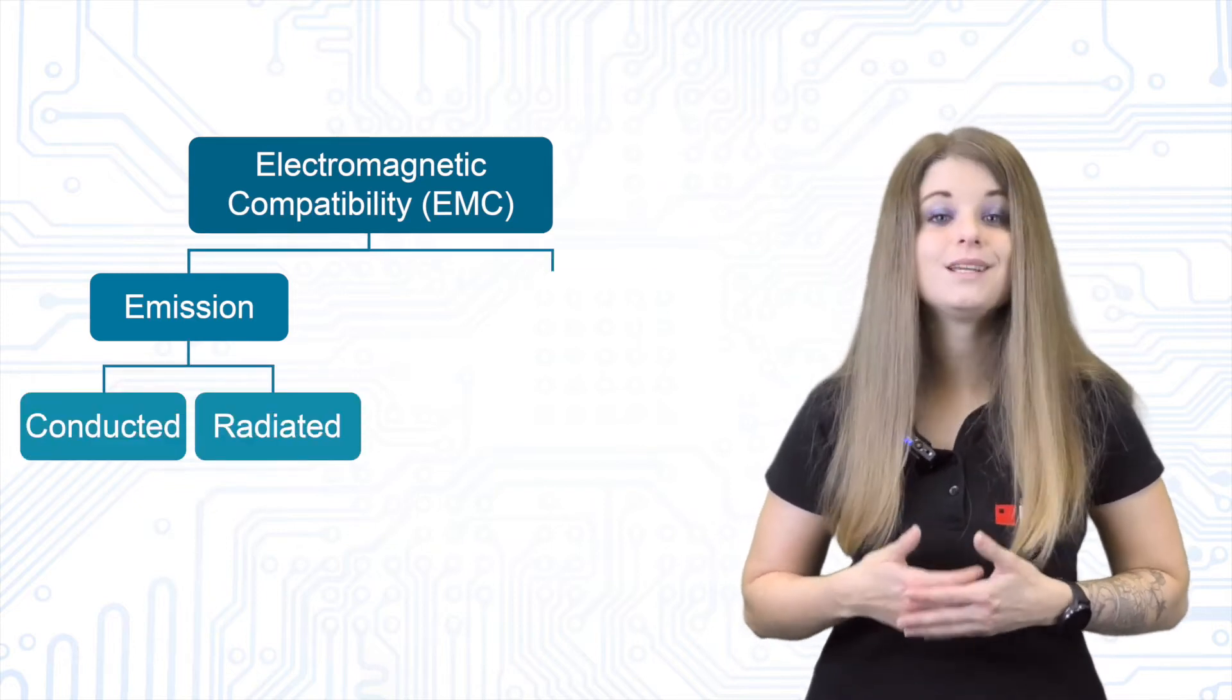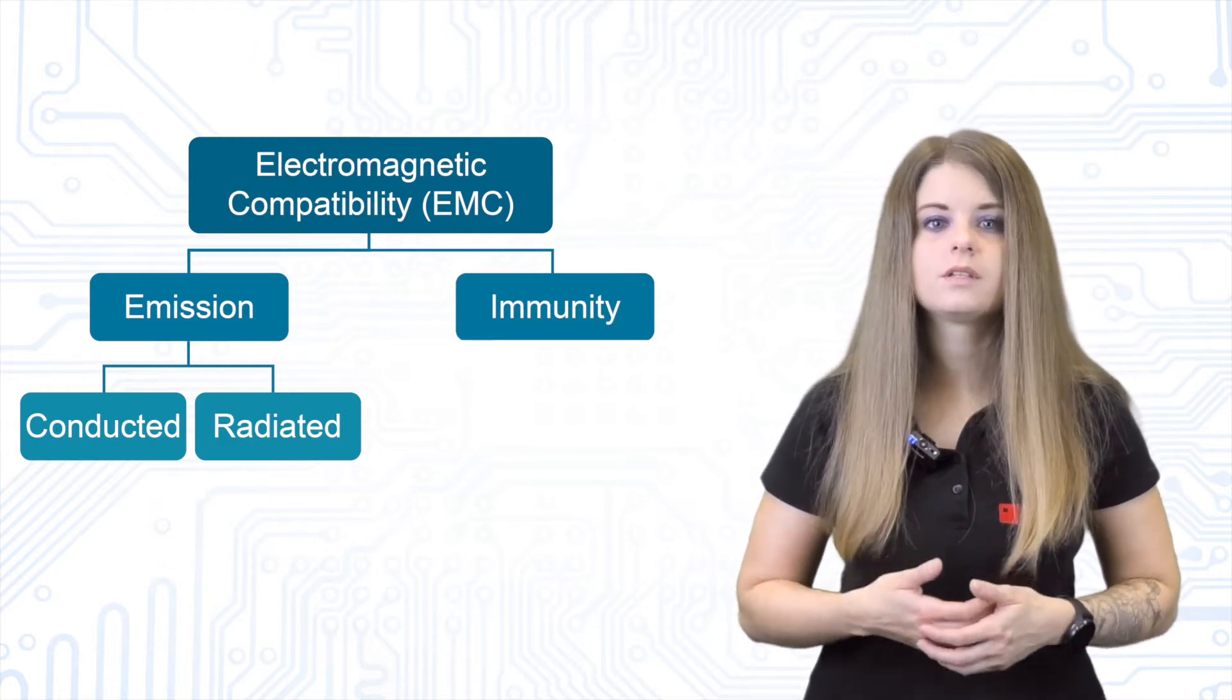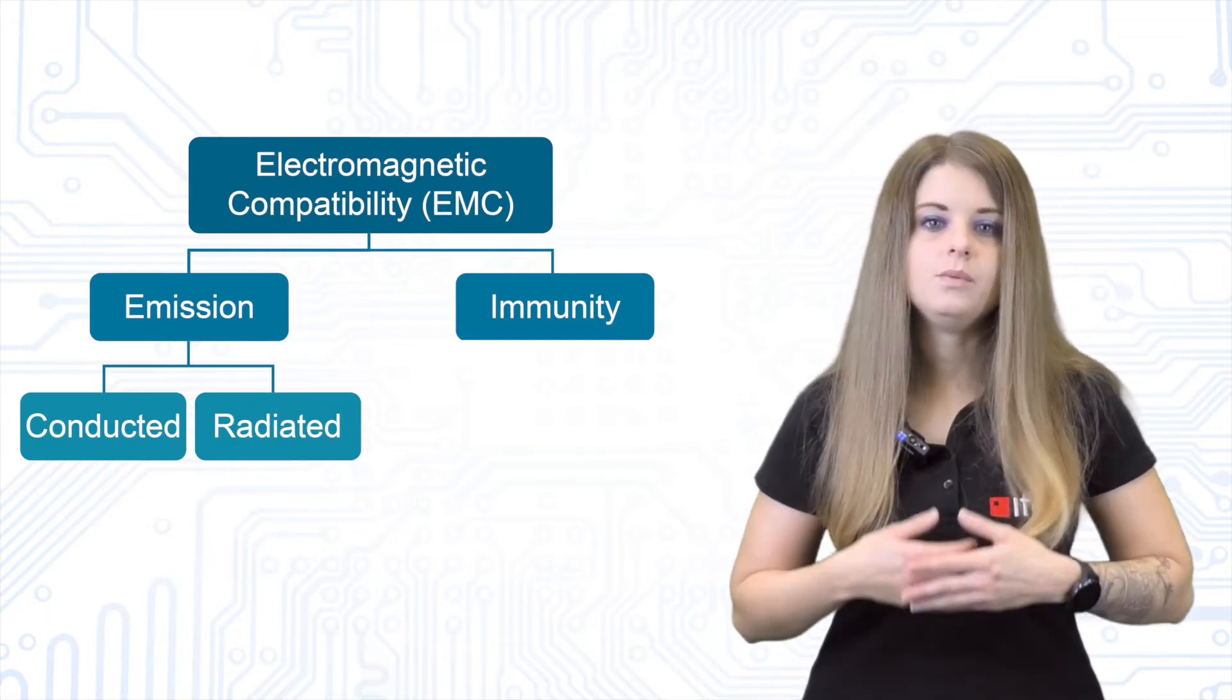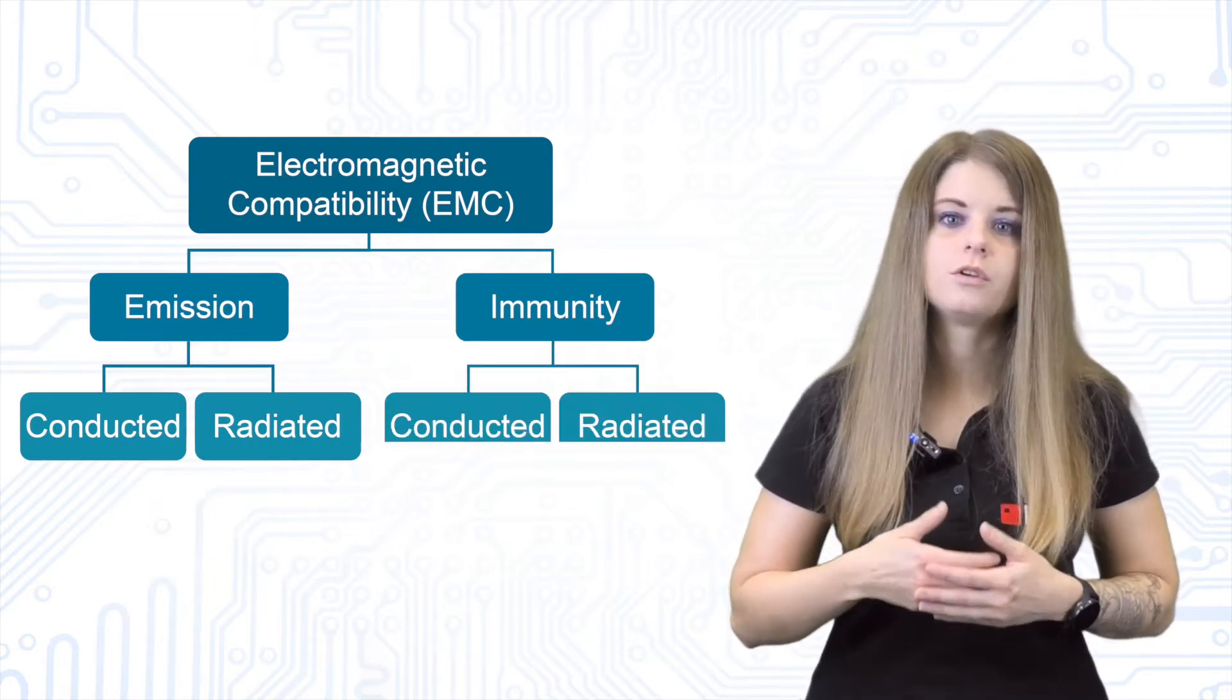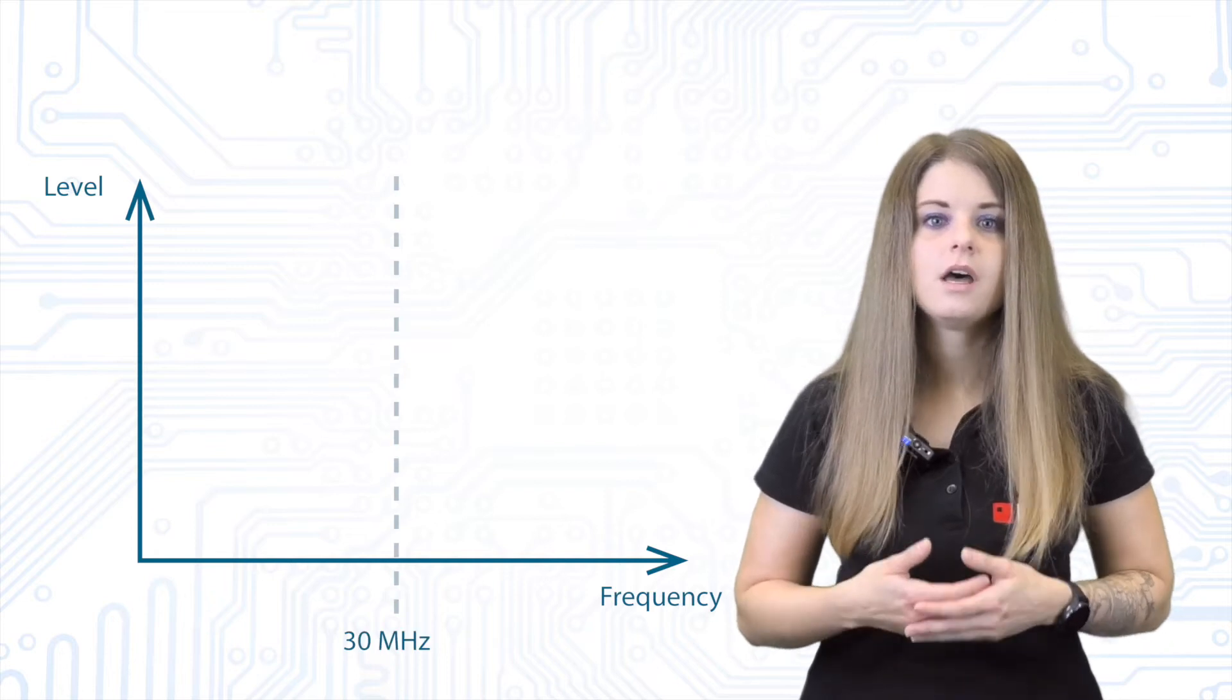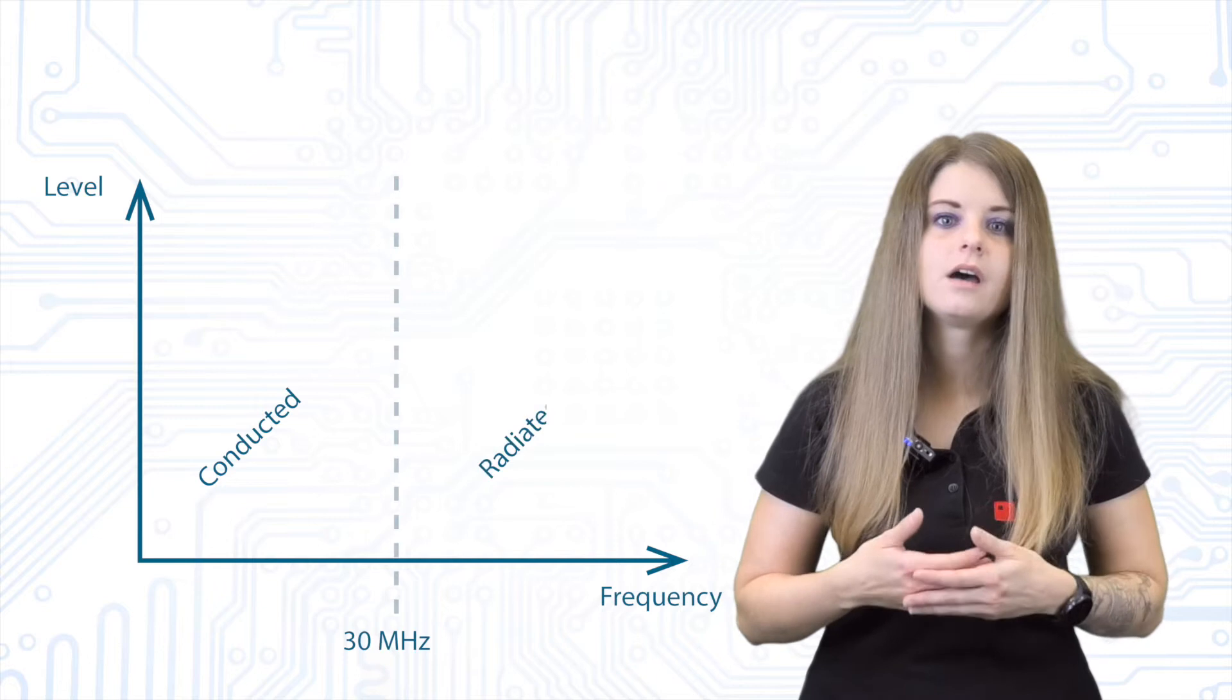The second property is called immunity. This means that the device must be robust and not susceptible to electromagnetic disturbances of a certain intensity. Being robust means that it works properly while being exposed to conducted or radiated electromagnetic disturbance. Mostly disturbances up to a frequency of 30 MHz are conducted and disturbances from 30 MHz and higher are radiated.